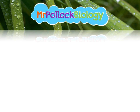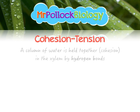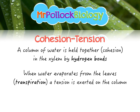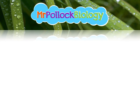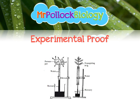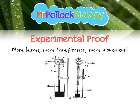Where does the tension come in? In cohesion tension, a column of water is held together by cohesion — hydrogen bonds — up the xylem. When water evaporates from the leaves during transpiration, a tension or pulling force is exerted on the column, causing water to move upwards through the xylem. Experimental proof uses a manometer with a cut stem: water moves up the manometer, and plants with more leaves show more transpiration and therefore greater movement.